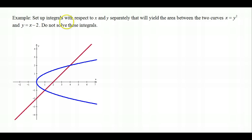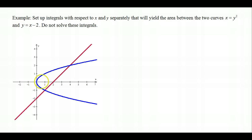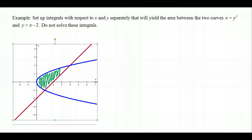Example 3: set up integrals with respect to x and y separately for the area between x = y² and y = x − 2 (do not solve). First, the setup with respect to y: looking at the bounded region, the top-minus-bottom situation is not optimal because starting from the left, the top and bottom are on the same curve. But over the whole interval on the y-axis, the right function is always the red line and the left function is always the blue curve.